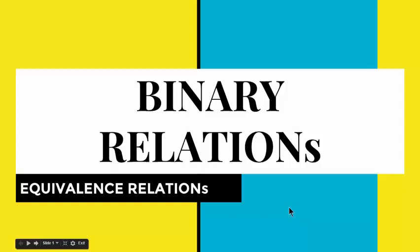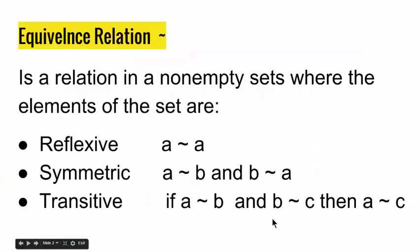Hello everyone, welcome to a new chapter in discrete mathematics — binary relations. In this video we are going to talk about equivalence relations. An equivalence relation — this is the symbol of it, it's just a wiggle — is a relation in a non-empty set where the elements of the set are reflexive, symmetric, and transitive.